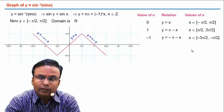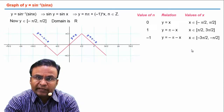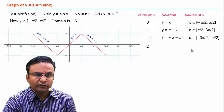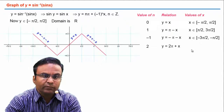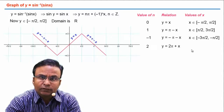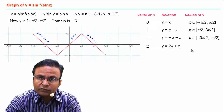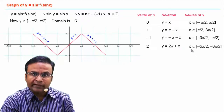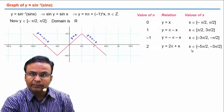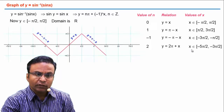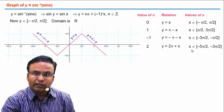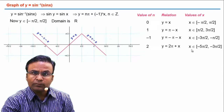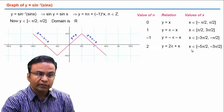For n = 2, we get the relation y = 2π + x. Calculating the values of x using the range constraint on y, we get x ∈ [-5π/2, -3π/2]. We draw the graph of y = 2π + x on this interval, which has slope 1.